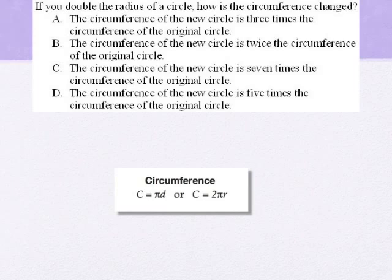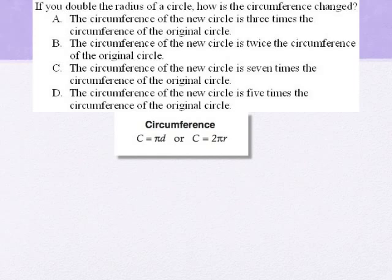The circumference of a circle is pi times diameter, or 2 times pi times radius. Since the question is asking about doubling the radius of the circle, let's focus on the circumference equaling 2 pi times the radius version of the circumference formula.